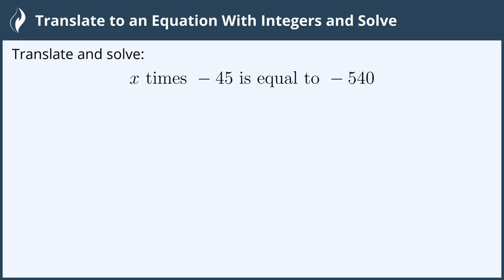Hi everyone! In this video we will translate to an equation with integers and solve. Translate and solve: x times negative 45 is equal to negative 540.